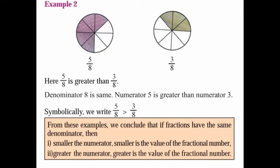Example 2. Compare 5 by 8 and 3 by 8. Here, 5 by 8 is greater than 3 by 8. The denominator 8 is the same in both. The numerator 5 is greater than 3. Symbolically, we write 5 by 8 is greater than 3 by 8.